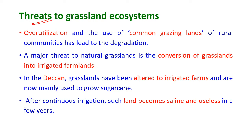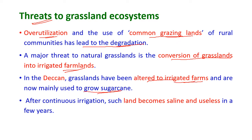Threats to grassland ecosystems: overutilization and the use of common grazing lands by rural communities has led to degradation. A major threat to natural grasslands is the conversion of grasslands into irrigated farmlands. In the Deccan, grasslands have been altered to irrigated farms and are now mainly used to grow sugarcane. After continuous irrigation, such lands become saline and useless within a few years.